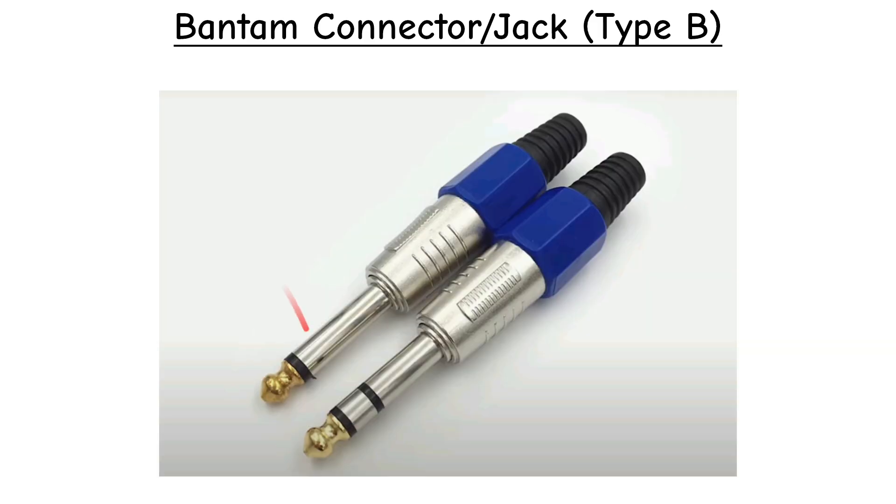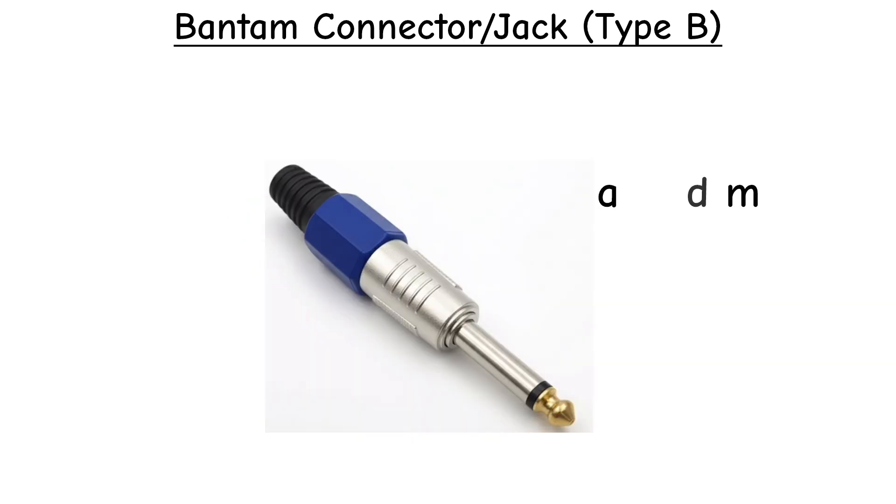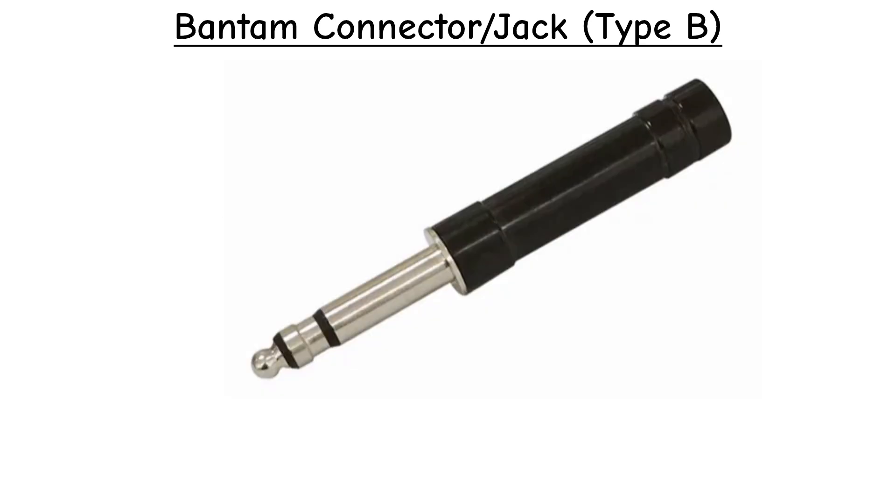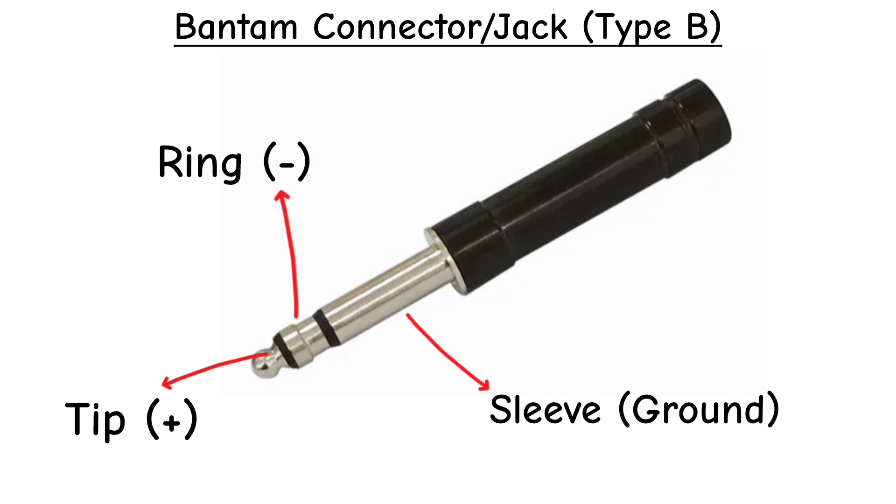Like other phone connectors, it comes in TS and TRS forms. The TS version carries unbalanced mono, while the TRS version supports balanced audio with tip for positive, ring for negative, and sleeve for ground, allowing clean low-noise signals.